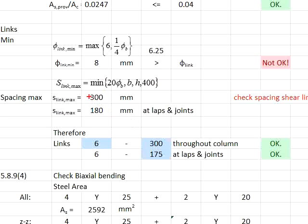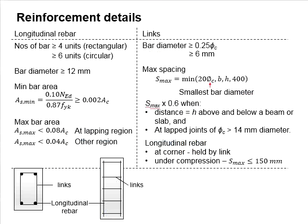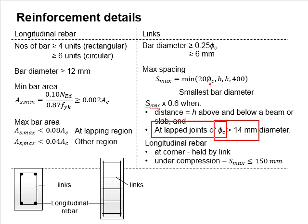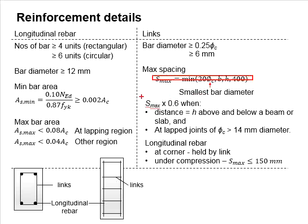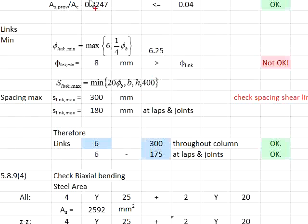Choose the minimum value of these four components. We know that the maximum allowable spacing for the link will be 300 mm. It is also noted that at the lapping joint of the column, for bar sizes greater than 14 mm, the calculated maximum spacing will have to be reduced — multiplied by 0.6 — giving you 180 mm for the lapping joints.